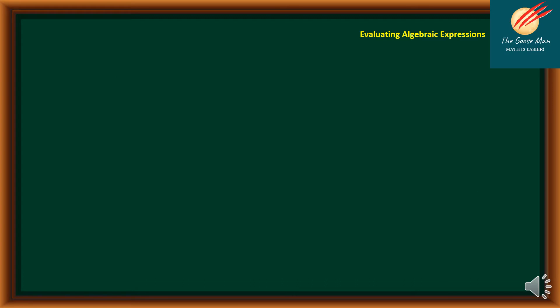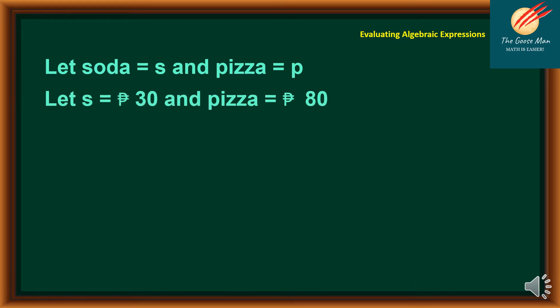Let's have an application of evaluating algebraic expressions. Say for instance, you would like to treat your best friend for soda and pizza. We will let soda equal S and pizza equal P. The cost of each soda is 30 pesos and pizza is 80 pesos per slice. You decided to buy two cans of soda and five slices of pizza. So how much will you pay in all?